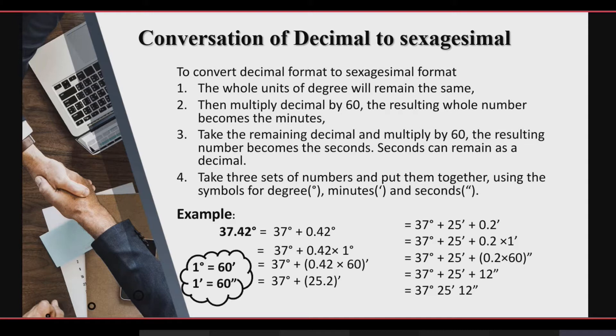The fourth step: take the three sets of numbers and put them together using the symbols for degree, minutes, and seconds. So, there is an example: 36.42 degrees, which is in decimal form.